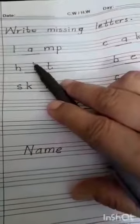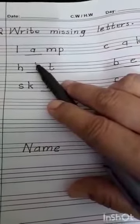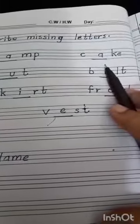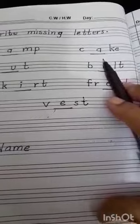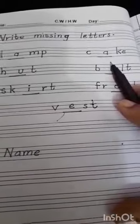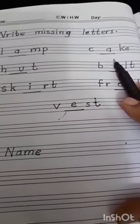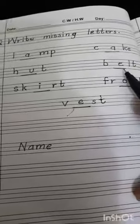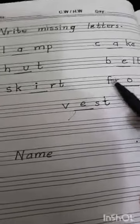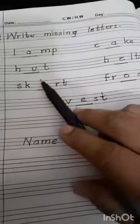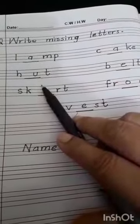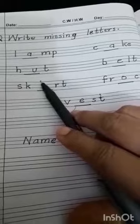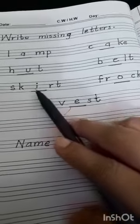Then H-blank-T. Which letter is missing here? H-U-T. The missing letter is U, so the word is HUT.